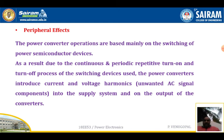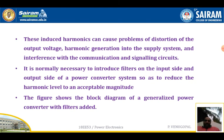We also have devices like MCT and TRIAC. The switching of these devices converts power from one form to another. As a result of the continuous and periodic repetitive turn-on and turn-off process, power converters introduce current and voltage harmonics into the supply system and also into the output of the converters. These induced harmonics can cause problems of distortion of the output voltage, harmonic generation in the supply system, and interference with communication and signaling circuits. It is necessary to introduce filters on both the input and output sides of the power converter system to reduce the harmonic level to an acceptable magnitude.